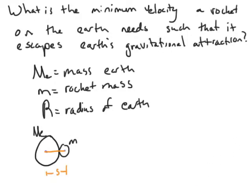Hi all, in this video we will be going over an example problem from the notes. The question is, what is the minimum velocity a rocket on the Earth's surface needs such that it escapes Earth's gravitational attraction?